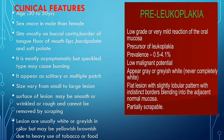Now let's see the clinical features of leukoplakia. But first, let's discuss pre-leukoplakia — the condition just before leukoplakia. In pre-leukoplakia there is a low-grade or very mild reaction of the oral mucosa; you can feel a slight burning sensation. It is a precursor to leukoplakia, occurring just before it. The prevalence is 0.5 to 4.1 percent, and it has low malignant potential compared to leukoplakia.